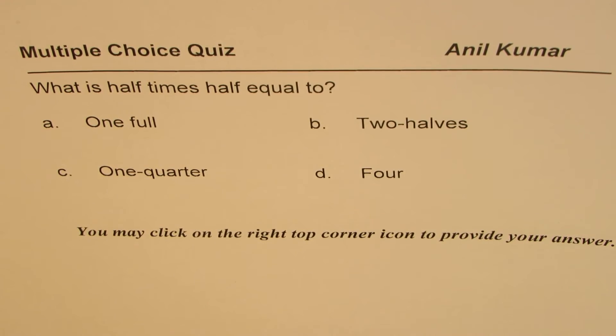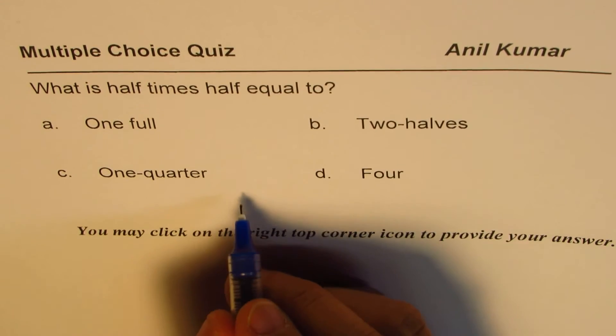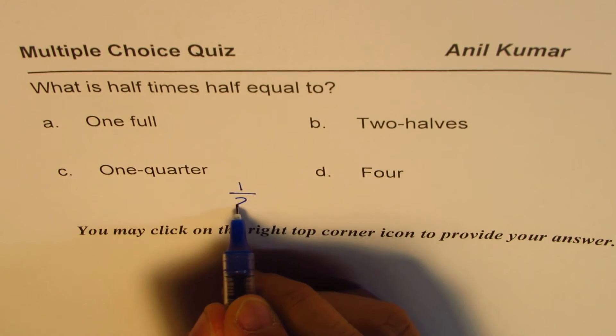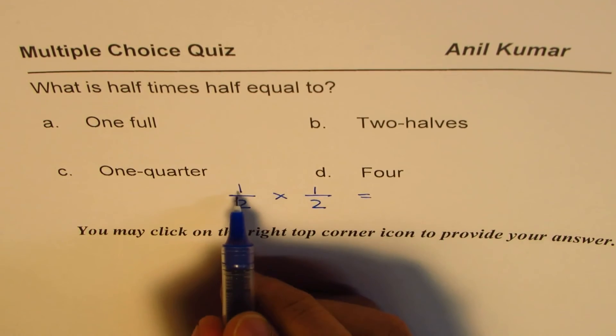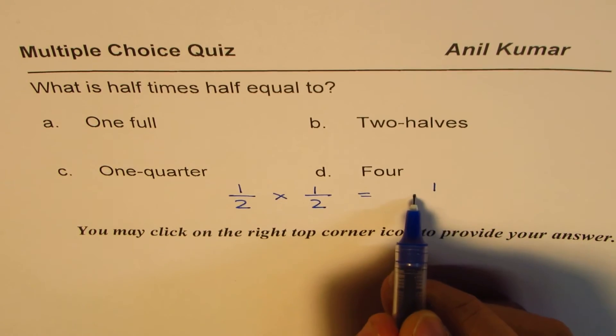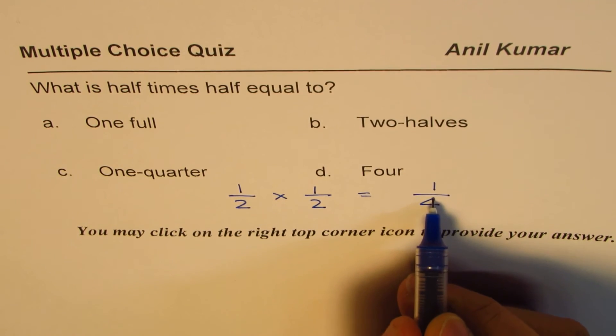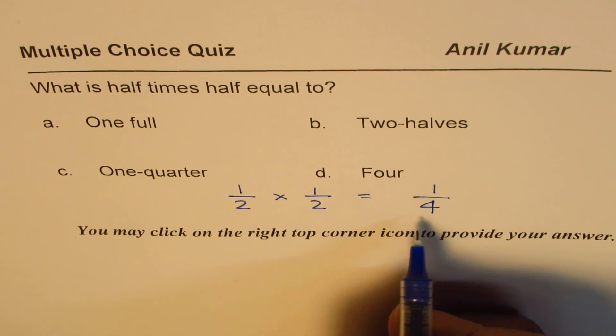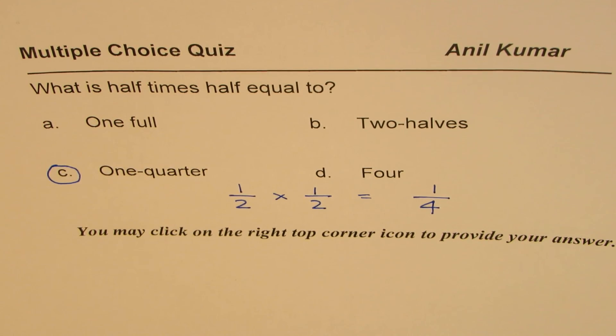Here is how we should be doing it. We have half times half, which is 1/2 × 1/2. When you multiply fractions, you multiply the numerators, which is 1 × 1, and the denominators, which is 2 × 2. That gives us 1/4 or one quarter, so the answer is option C.